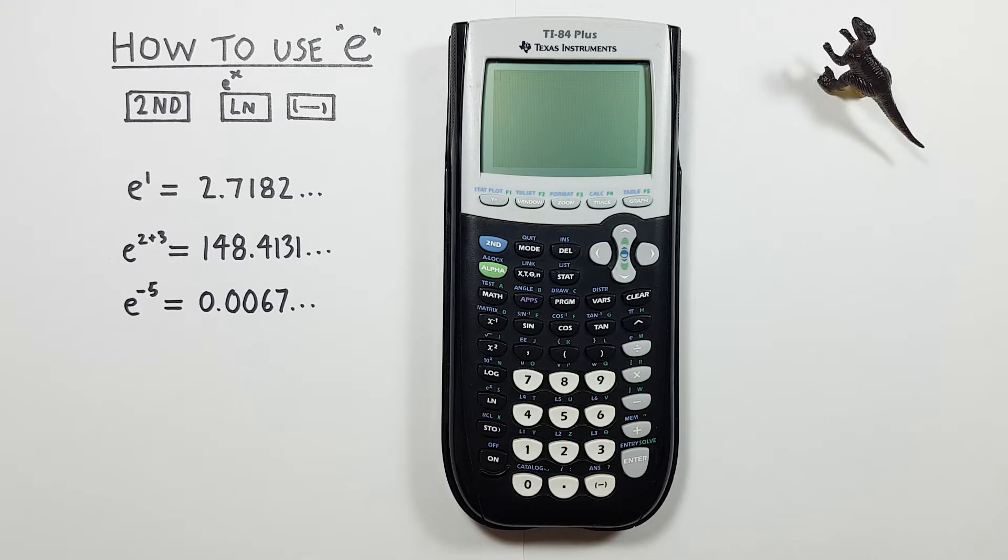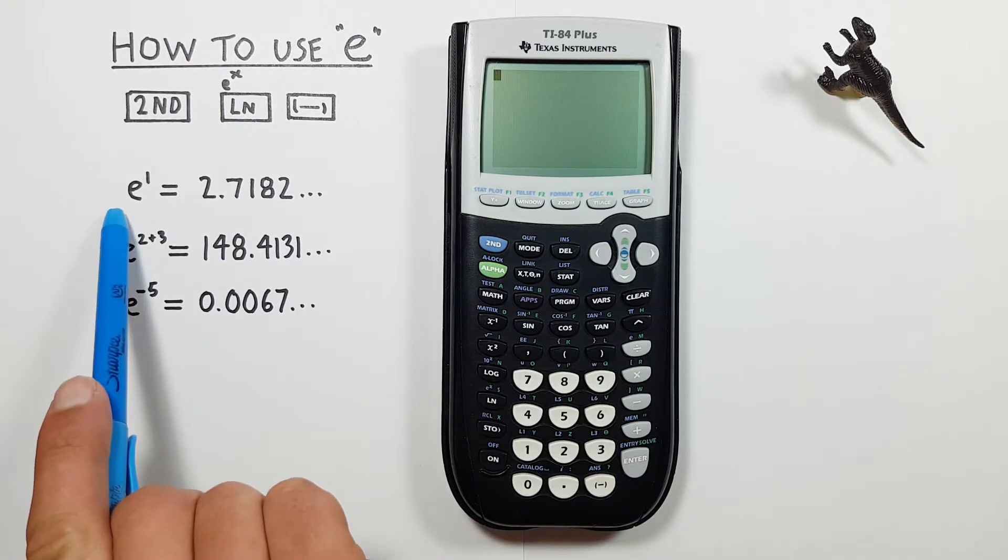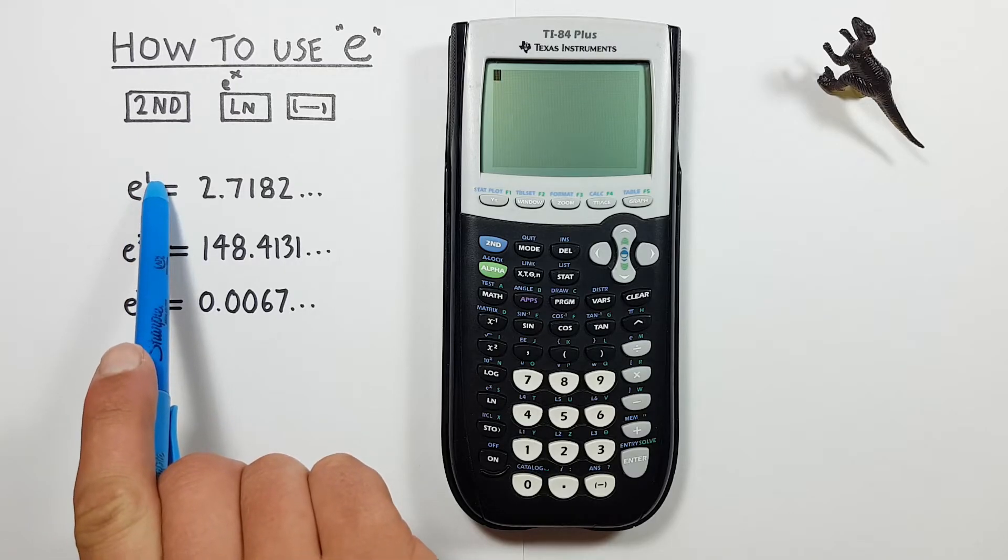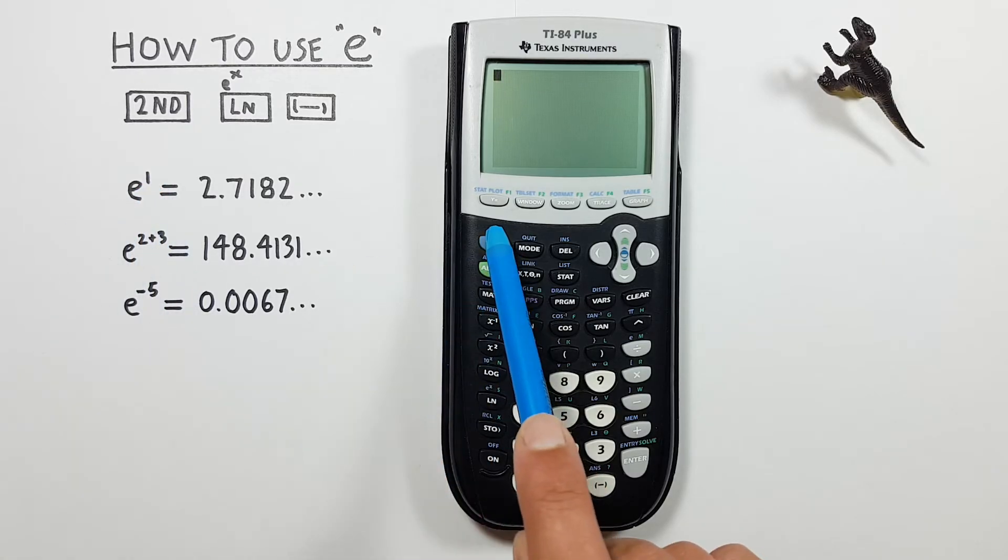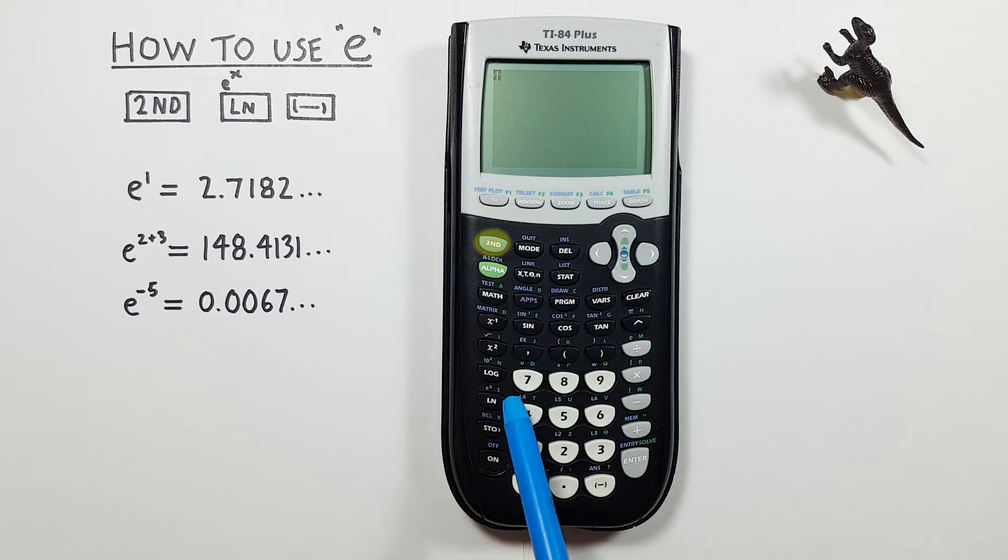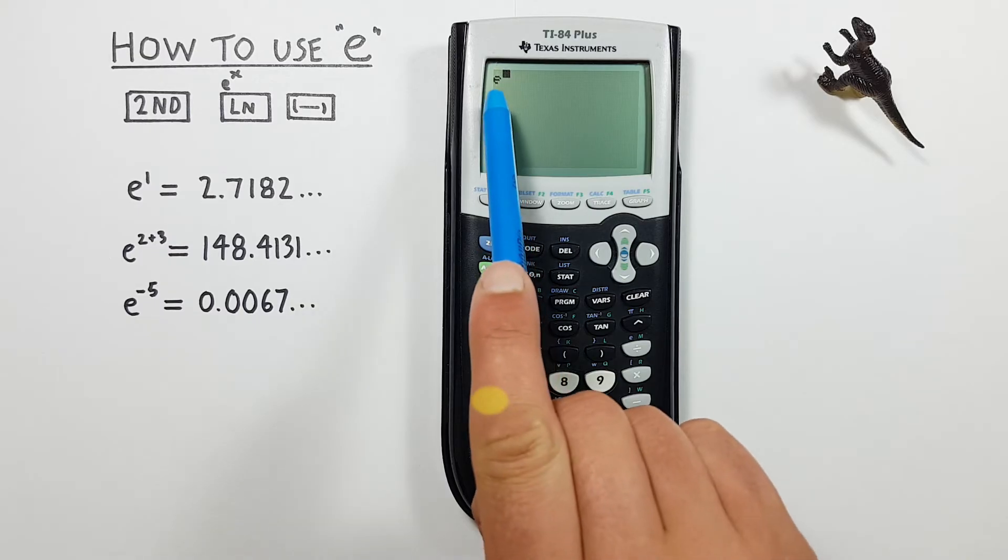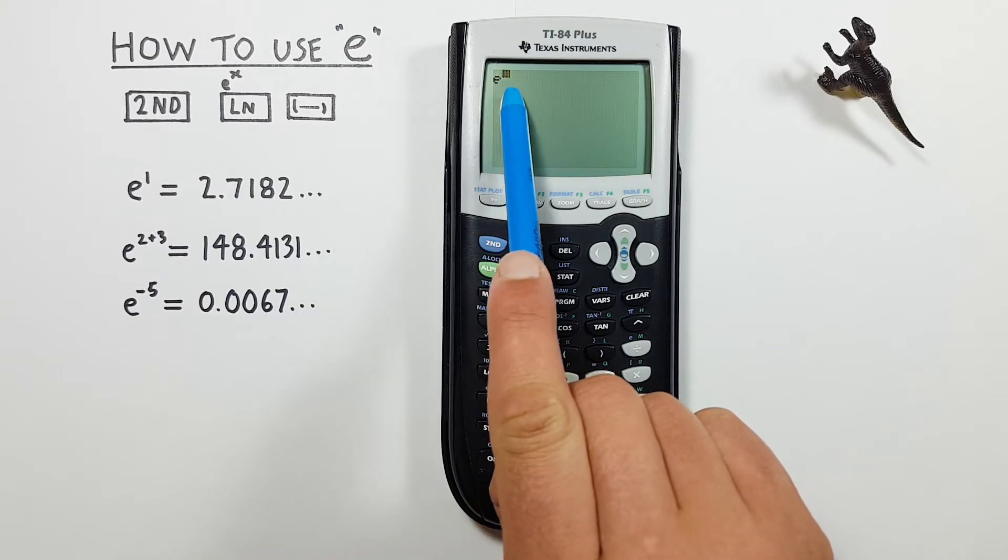To get started, if we just want to get e itself, or e to the power of 1, what we can do is press second and then the ln key and we see an e appear on our screen with a box above it for an exponent.